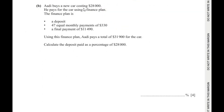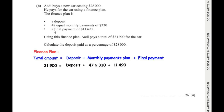Moving on to the next question. Adi buys a new car costing $28,000 and pays using a finance plan. The finance plan consists of a deposit, 47 equal monthly payments of $330, and a final payment of $11,490. Using this finance plan, Adi pays a total of $31,900 for the car. Calculate the deposit paid as a percentage of $28,000.